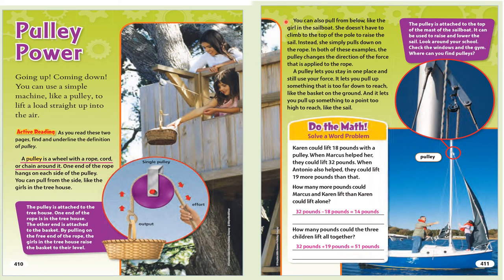You can also pull from below, like the girl in the sailboat. She doesn't have to climb to the top of the pole to raise the sail. Instead, she simply pulls down on the rope. In both of these examples, the pulley changes the direction of the force that is applied to the rope. A pulley lets you stay in one place and still use your force. It lets you pull up something that is too far down to reach, like the basket on the ground, and it lets you pull up something to a point too high to reach, like the sail. The pulley is attached to the top of the mast of the sailboat. It can be used to raise and lower the sail. Look around your school — check the windows in the gym. Where can you find pulleys?